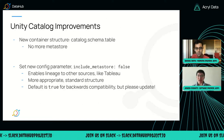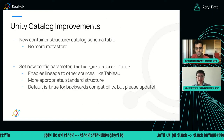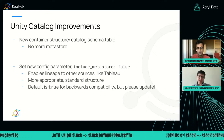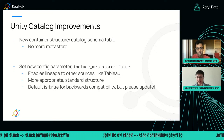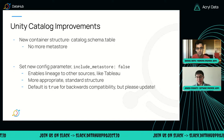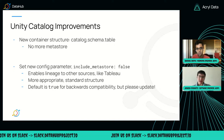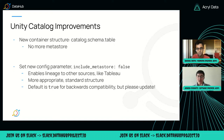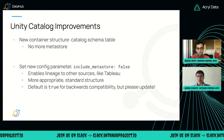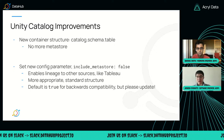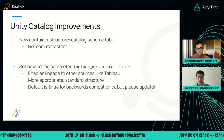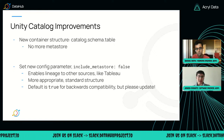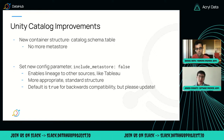We've made a few more Unity Catalog improvements. The biggest one — and this is going to be a breaking change if you set the config — is that we changed the container structure. We used to include metastore and then catalog, schema, and table. We're trying to make this more standardized and fit better with the way Unity Catalog is structured, where you can have multiple workspaces pointing at the same metastore. Since we're only ingesting from one workspace, it doesn't really make sense to include metastore in that structure.